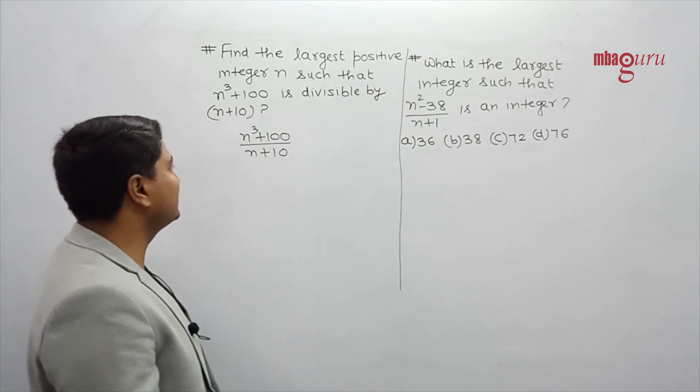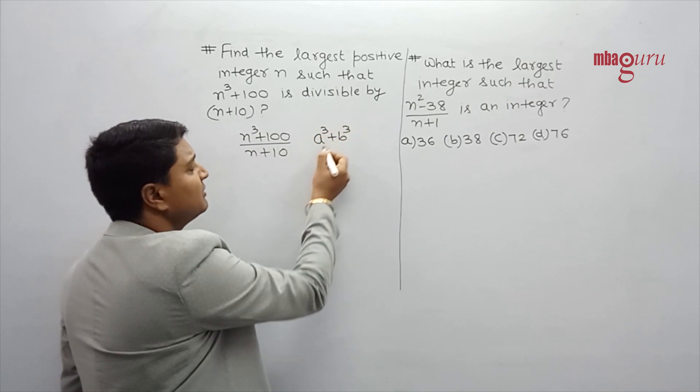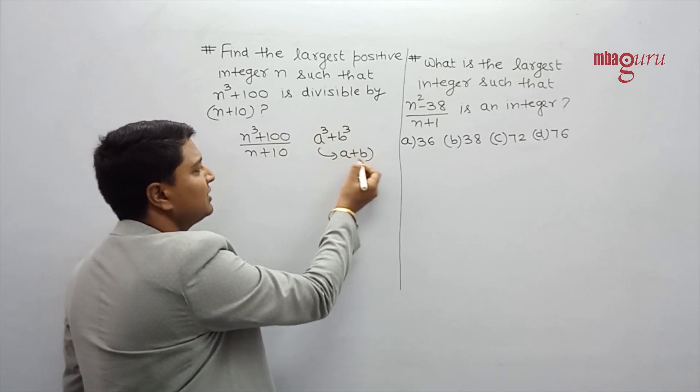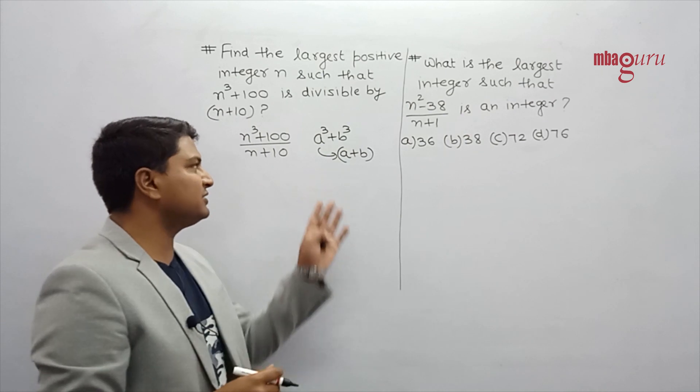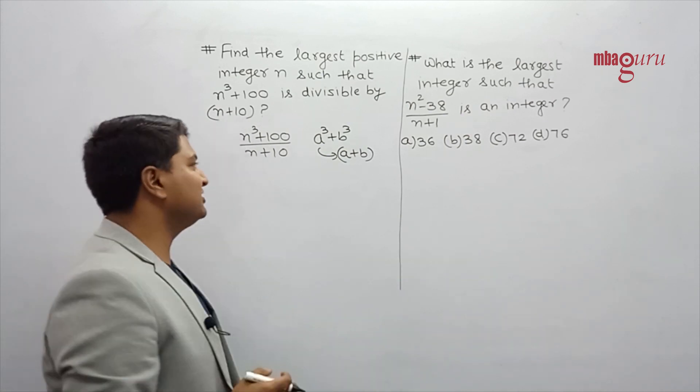So how do we solve this question? First of all, let me tell you a little identity. Can we say a squared plus b squared is always divisible by a plus b? Because a squared plus b squared of identity is a plus b into something. So this is always divisible.